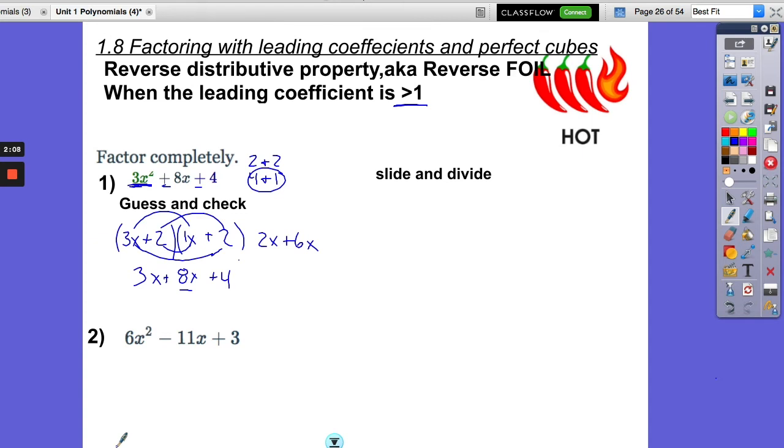Now, there's another way to do these that follows kind of an algorithm that will always be able to get them right for you. But it does involve a few more steps. Some of you will like this. Some of you may like the guess and check. So the way we do it is it's called slide and divide. If we have 3x squared plus 8x plus 4, what we do here is we are going to take the 3 and get it out of there by sliding it to the end. So we're going to have x squared plus 8x plus 12. So we multiply the 3 times the 4. Now, we just need to factor that.